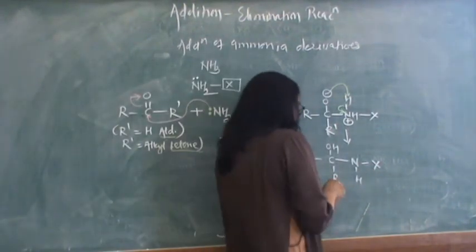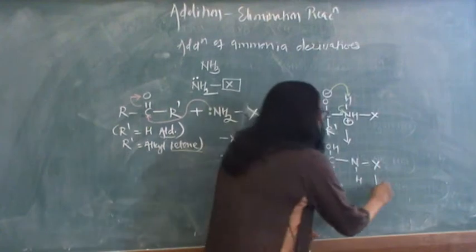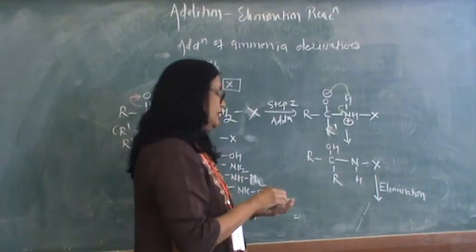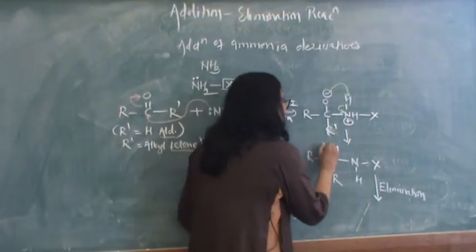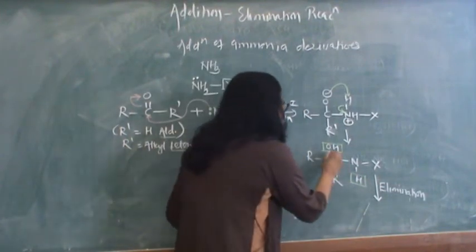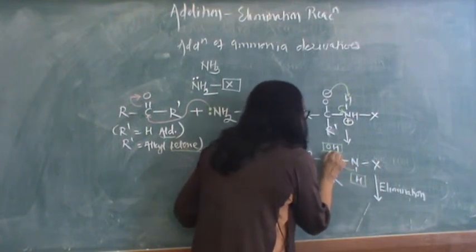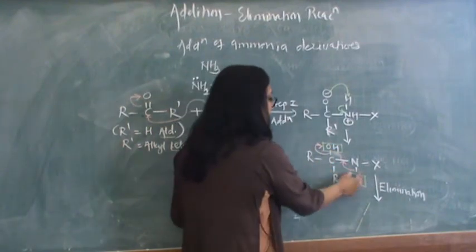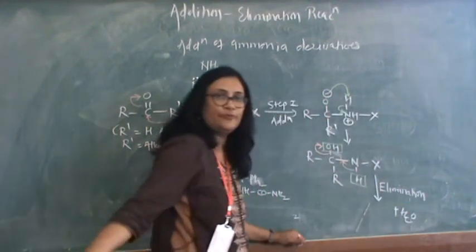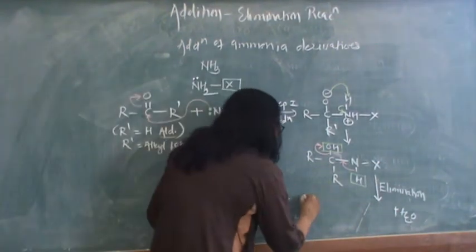Now this particular product formed does not become stable here. It immediately undergoes elimination. Elimination of what? Elimination of water molecule. See now here you have OH and H. So this molecule undergoes elimination of water molecule which can be shown in this manner. H plus and OH minus, they together will form water molecule. So water molecule is eliminated from this.